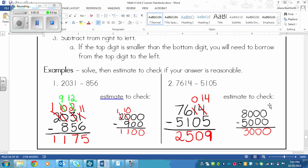And then we're estimating to check as well. So we look at the 7. And then we look right next door. 6 is 5 or more. So we raise the score of the 7 to 8,000. And then we have the 5 here. And 1 is 4 or less. So we let the 5 rest. So we get 5,000. So 8,000 minus 5,000 equals 3,000. And so 3,000 is pretty close to 2,509.